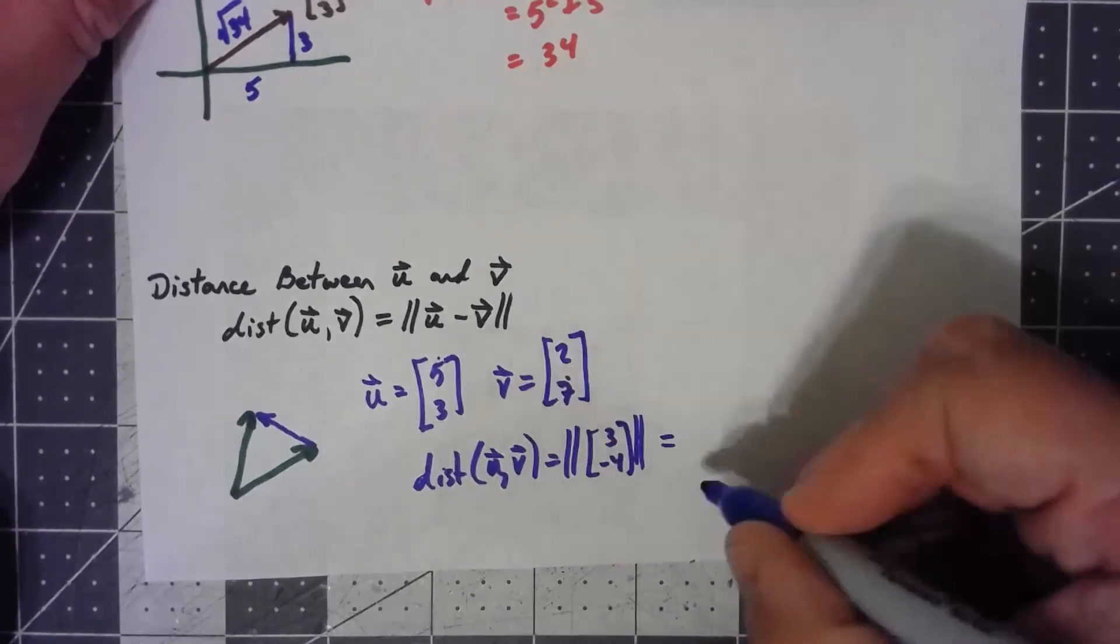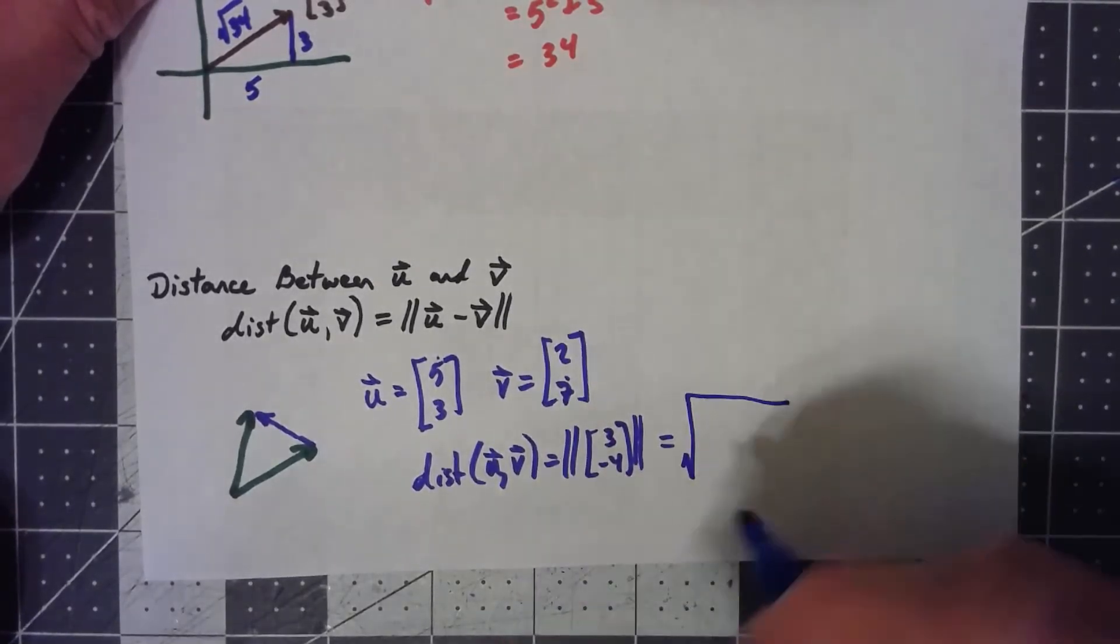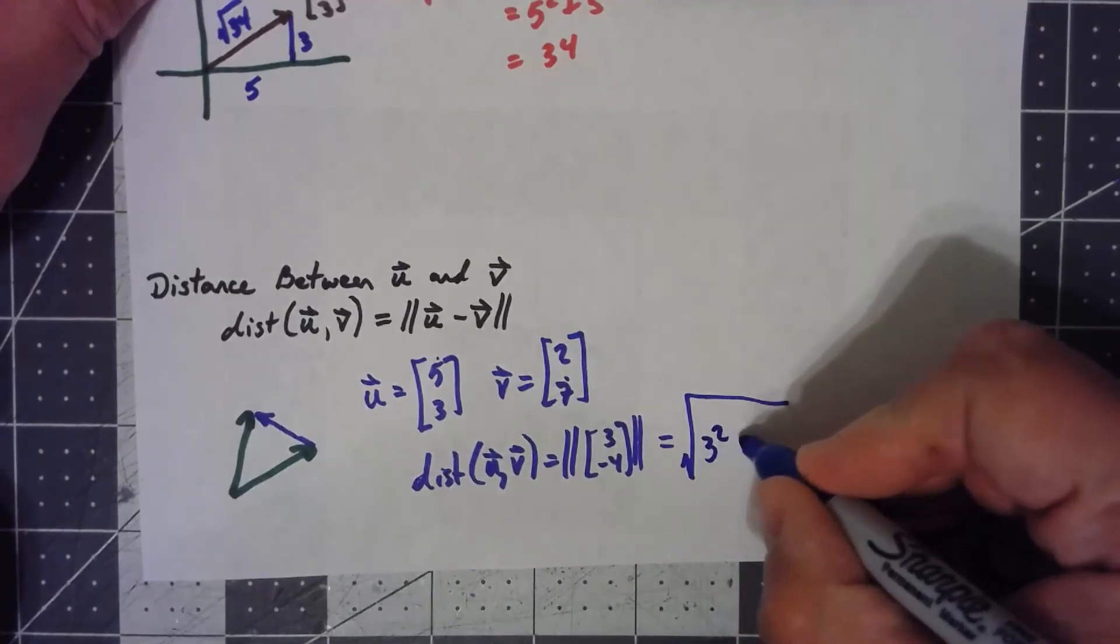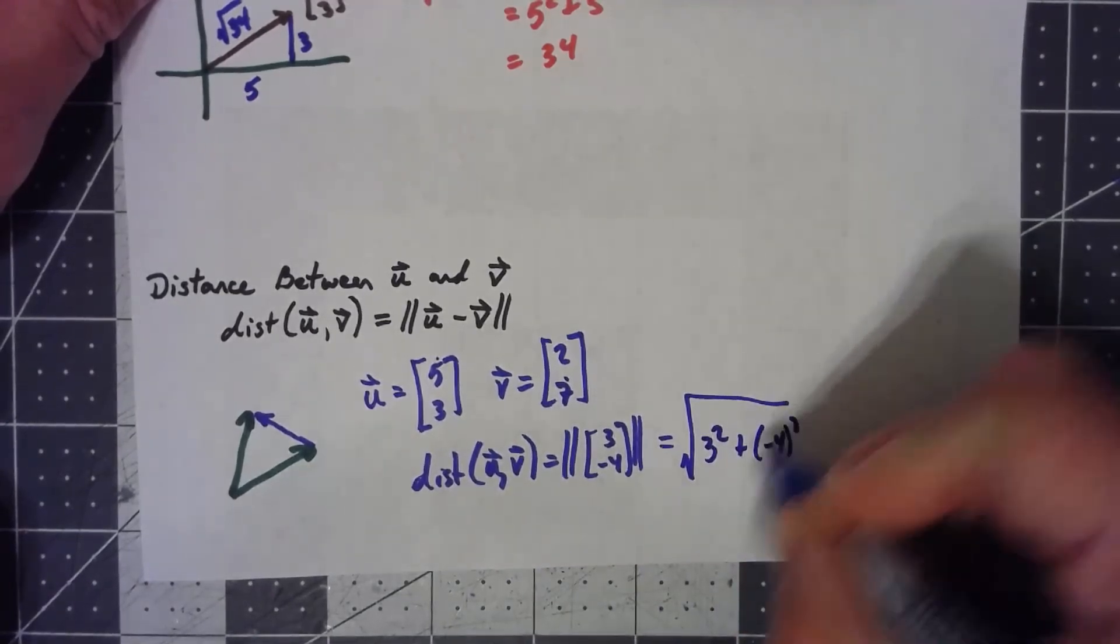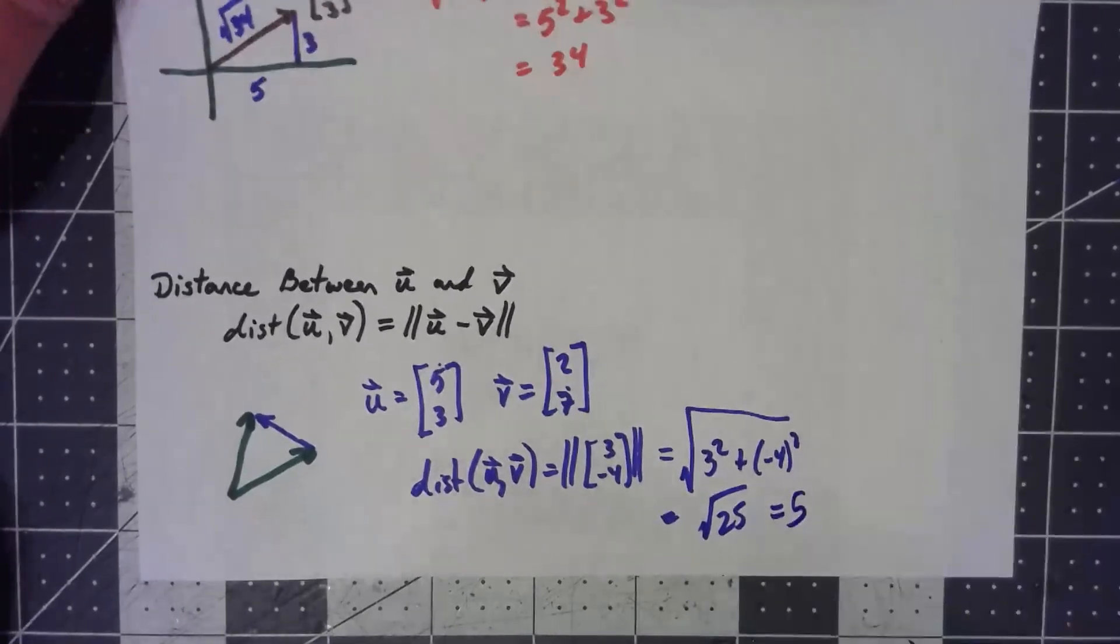So the norm is the square root of the dot product of this with itself, 3 squared plus negative 4 squared, square root of 25 is 5.